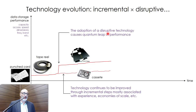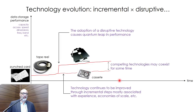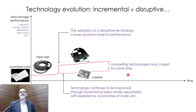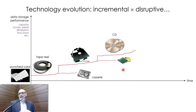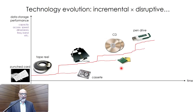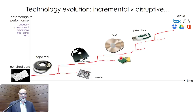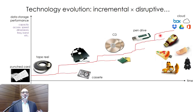After the floppy disk came the CD, then small disks, then the pendrive, and now cloud storage — with the pendrive evolving to very sophisticated data storage. There are two key points: the adoption of a disruptive technology causes a quantum leap in performance; and competing technologies may coexist for some time — that 'some time' could be one year, five years, or 100 years. There's also an important concept I cannot show in this slide: robustness.